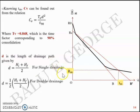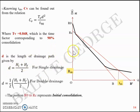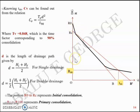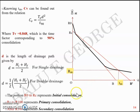Depending on whether the soil in the laboratory is under single or double drainage, choose the appropriate drainage path length d. Looking at the graph, the portion R₀ to Rc represents initial consolidation, Rc to R₁₀₀ represents primary consolidation, and after R₁₀₀ you have secondary consolidation.